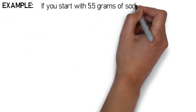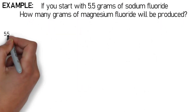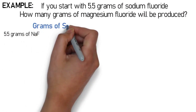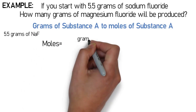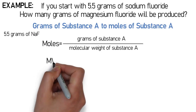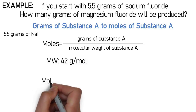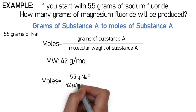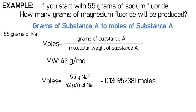Recall the example: if you start with 5.5 grams of sodium fluoride, how many grams of magnesium fluoride will be produced? In step two, we must change our grams to moles. We take the grams of sodium fluoride and divide by its molecular weight. The molecular weight of sodium fluoride is 42 grams per mole, so we divide 5.5 grams by 42 grams per mole. This gives us 0.130952381 moles. I do not do any rounding until the end.